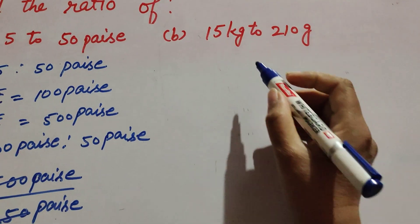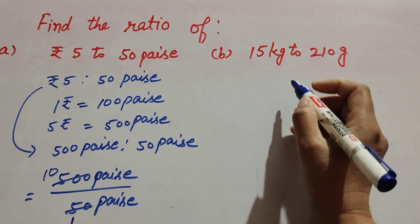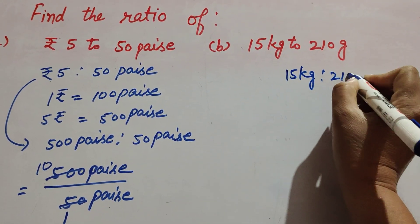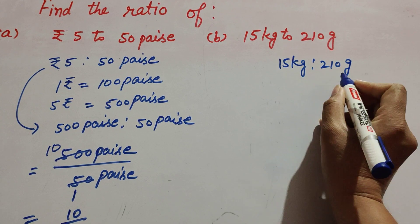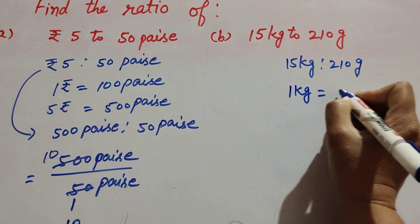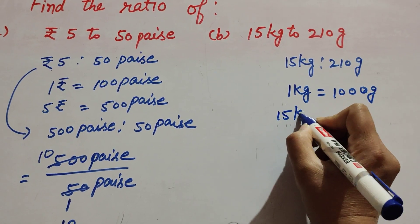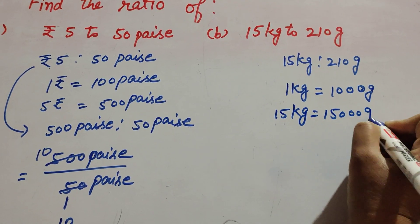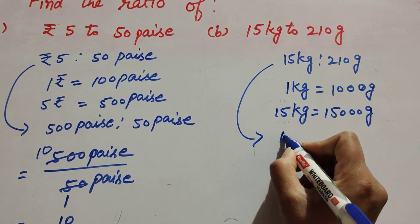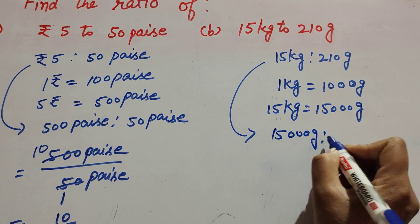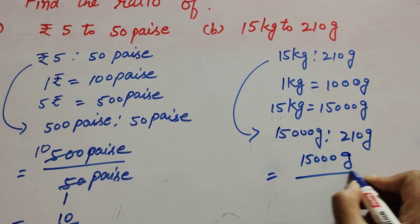Now we move to part B: 15 kg to 210 gram — we find its ratio. We write it as 15 kg ratio 210 gram. The units are kilogram and gram, so first we change kilogram to gram. 1 kilogram is equal to 1000 gram, and 15 kilogram is equal to 15000 gram. We write this as 15000 gram ratio 210 gram, or 15000 over 210.